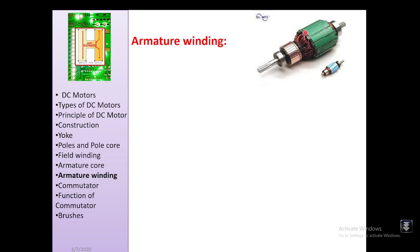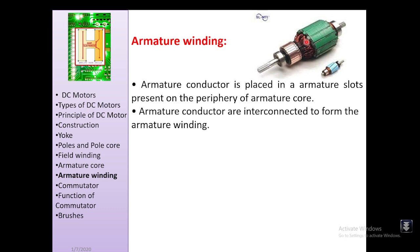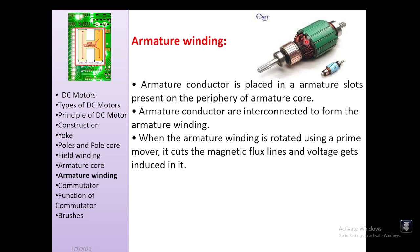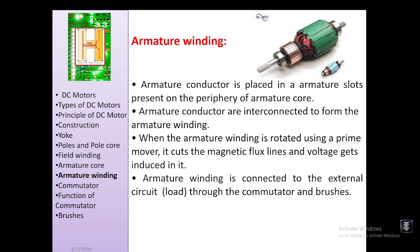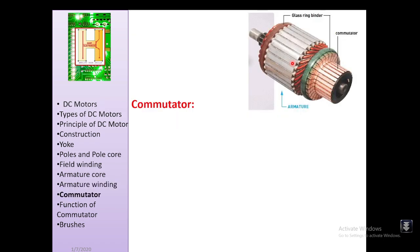Armature conductors are placed in the slots on the periphery of the armature core and interconnected to form the armature winding. When the armature winding rotates, it cuts the flux lines and voltage is induced. The armature winding is connected to the external load through the commutator and brushes. It is generally made of copper for long durability.